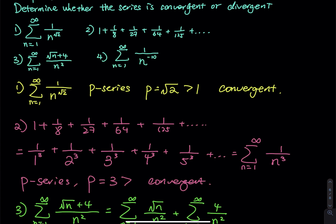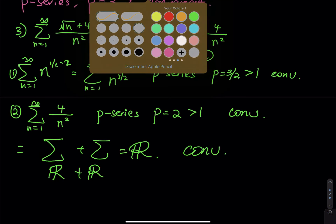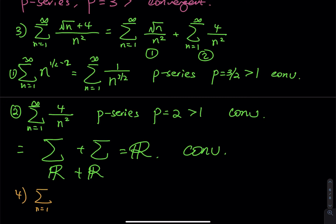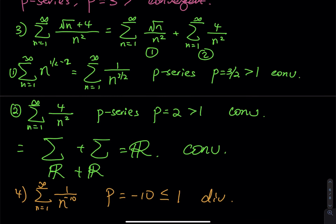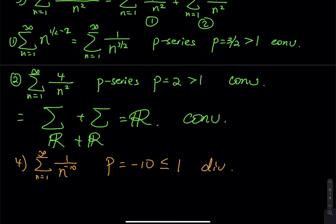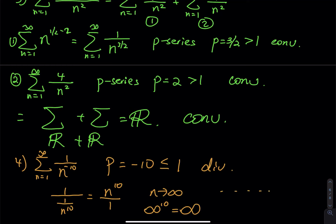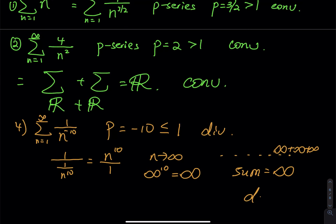Example 4: we have the sum from n=1 to infinity of 1 divided by n raised to the negative 10. This is a p-series with p equal to negative 10, which is less than or equal to 1. So the series is divergent. Here's why: 1 divided by (1/n^10) equals n^10 divided by 1. As n goes to infinity, you have infinity raised to the 10th power, which equals infinity. So by the time you reach the last couple terms, you are adding up a bunch of infinities, making the sum infinity. Therefore the entire series is divergent.